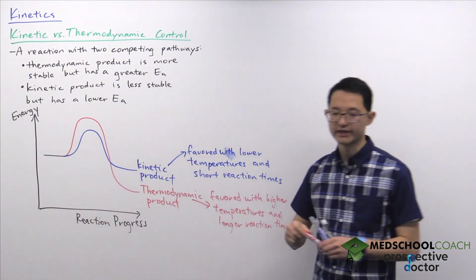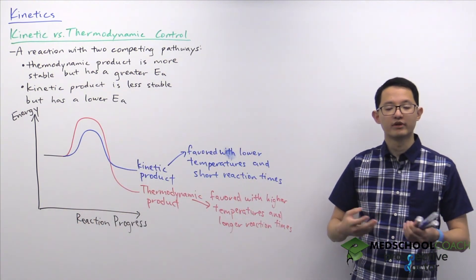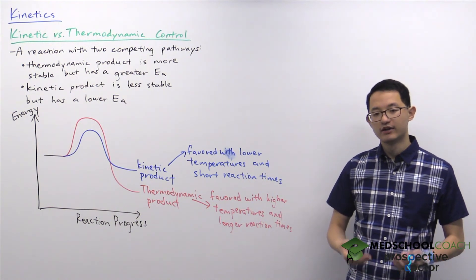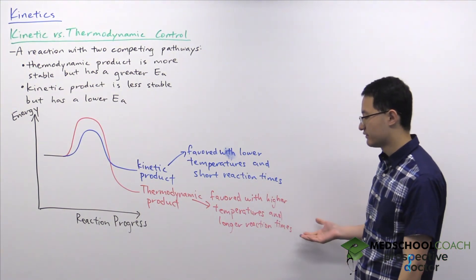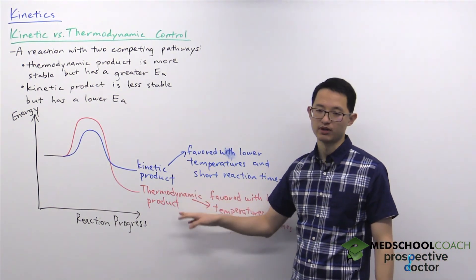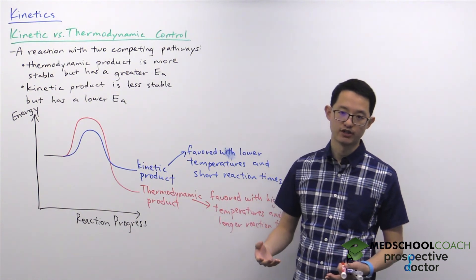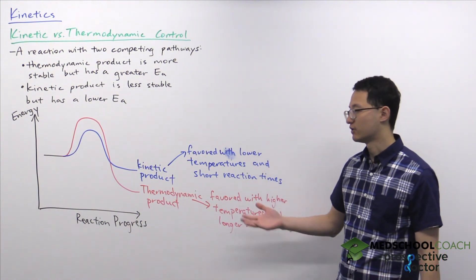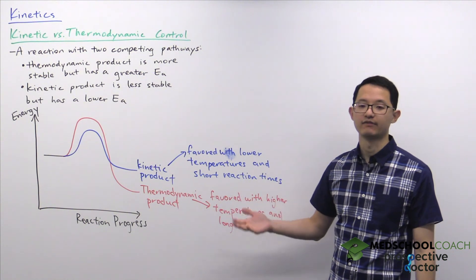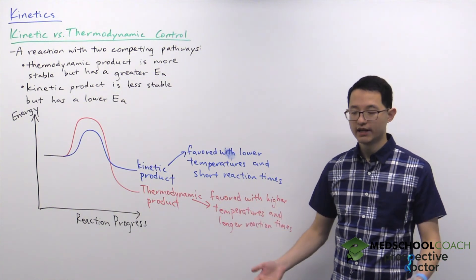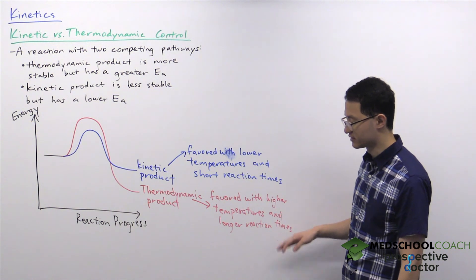So when you're encountering an MCAT question where there's more than one product that can be formed, you want to keep in mind: are there differences in the stability of the products? Are there differences in the activation energy? That might indicate that the question is asking about kinetic versus thermodynamic control, in which case you then want to think about the conditions.